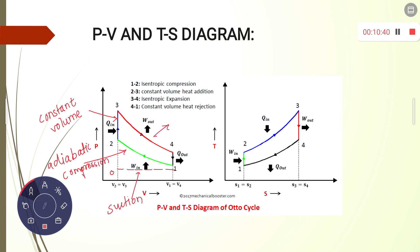Then the process from three to four is known as adiabatic expansion. During this, expansion takes place — the mixture burns and it expands adiabatically. The process from four to one is known as exhaust, meaning the heat is rejected from the air at constant volume.